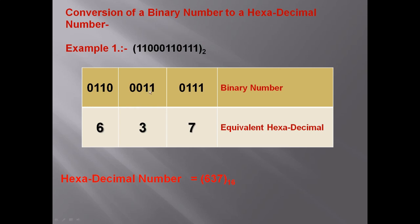So the last group becomes 0110. These are the binary number groups. Then we write the hexadecimal equivalent of each binary group from the table given in the book.